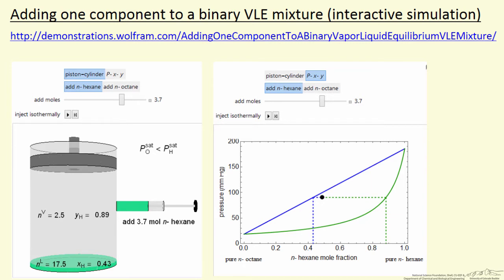I'm going to briefly describe how to use an interactive simulation that starts with a vapor-liquid binary mixture in equilibrium. The mixture is an ideal mixture of normal hexane and normal octane.